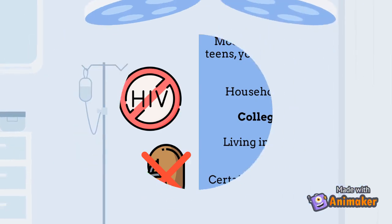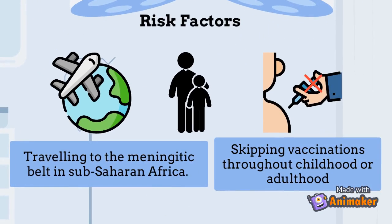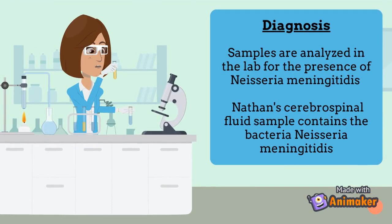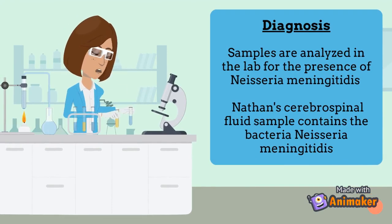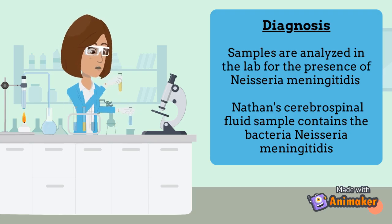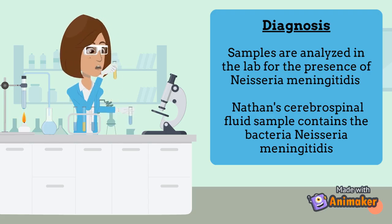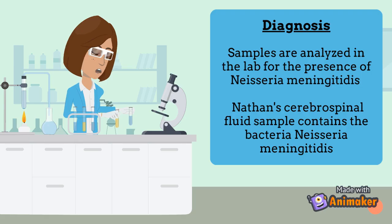Additional risk factors include traveling to the meningitis belt in sub-Saharan Africa and skipping vaccinations throughout childhood or adulthood. Coming back to our case study, Nathan's cerebrospinal fluid sample was analyzed in the lab to detect the presence of the bacteria Neisseria meningitidis, and unfortunately, the poor guy's sample contains the bacteria.